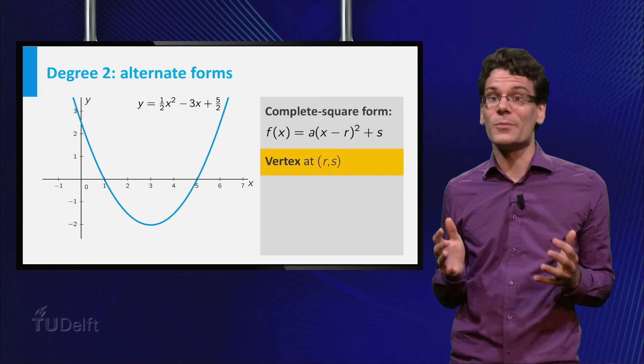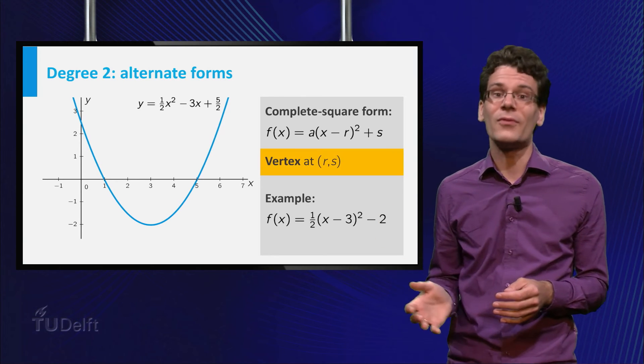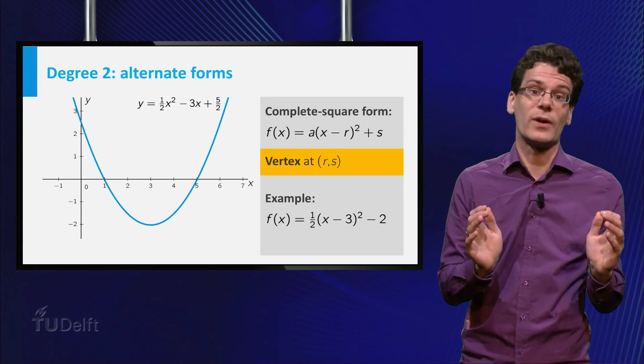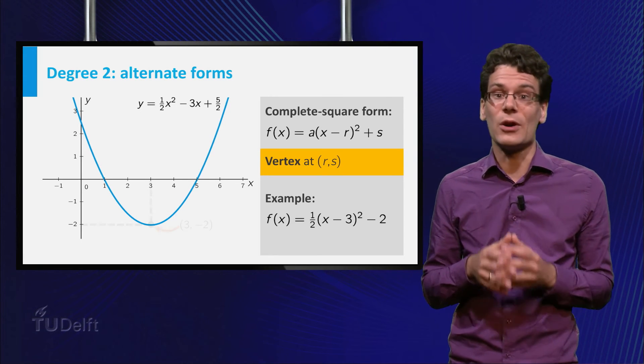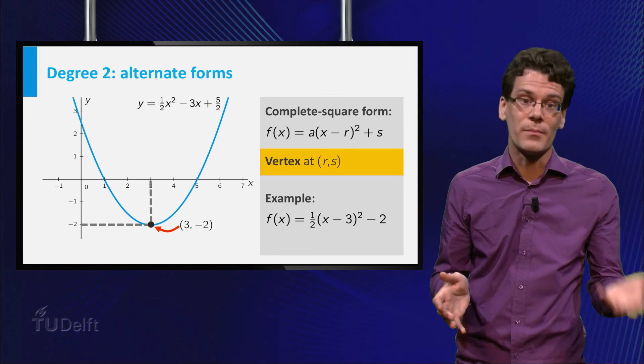Our example polynomial can also be written in this form, 1 half times x minus 3 squared minus 2. And indeed, you see that the vertex is located at 3, minus 2.